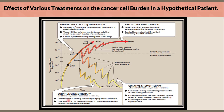For disseminated cancers such as leukemia, the curative chemotherapy option involves applying combination drug chemotherapy protocols. Combination drug chemotherapy reduces the chance of drug resistance, with each drug chosen to have a different cellular site of action or different cell cycle specificity, and each drug chosen to have different organ toxicity.